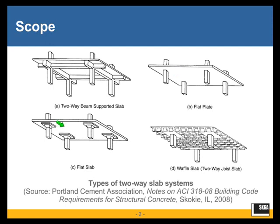As spans get long or loads get heavy, we have a problem with two-way or punching shear around the columns. To address this, we would many times thicken the slab locally around the columns, creating what are called drop panels. When a flat plate is equipped with drop panels, we call it a flat slab — which is in some ways a misnomer because the soffit is obviously not flat.